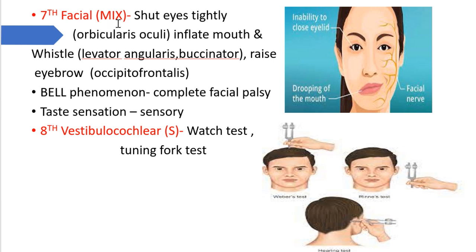The seventh nerve — facial — is also a mixed nerve. To test it, ask the subject to shut their eyes tightly to test orbicularis oculi; inflate their mouth with air and whistle to test levator angularis and buccinator; and raise their eyebrows to test occipitofrontalis. If facial symmetry is absent, you check for the Bell phenomenon. For the sensory component, the anterior two-thirds of the tongue is supplied by the seventh nerve, so taste sensation can also be tested.